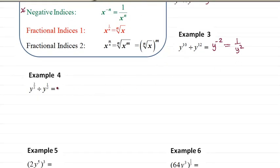Example 4. This time we are going to subtract half from 2 thirds. So we can write that as 4 over 6 minus 3 over 6. So that is 1 over 6.